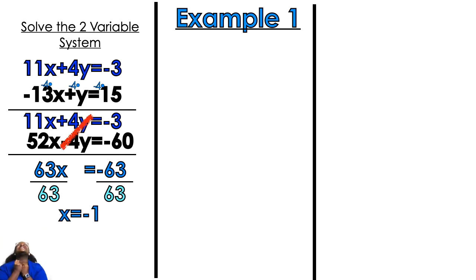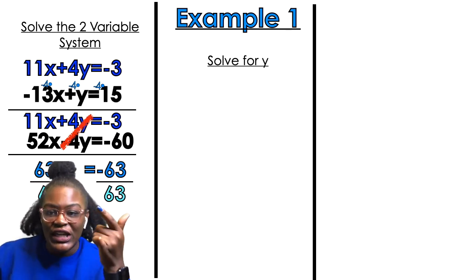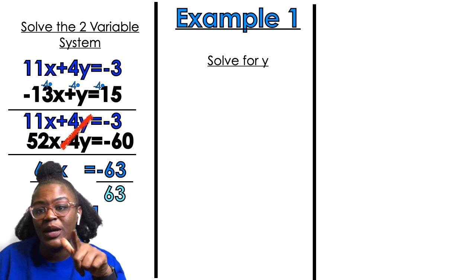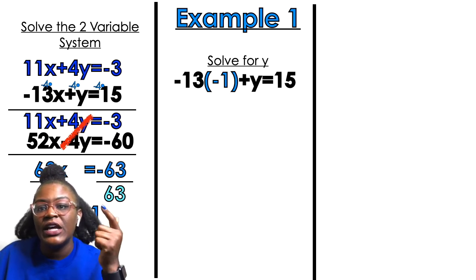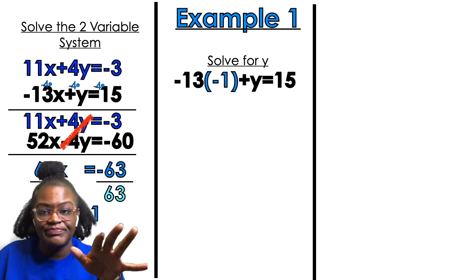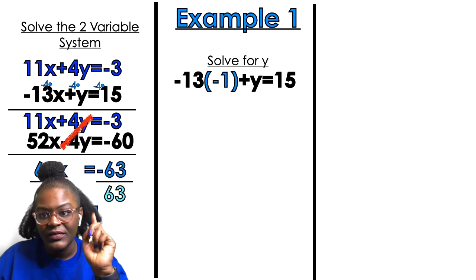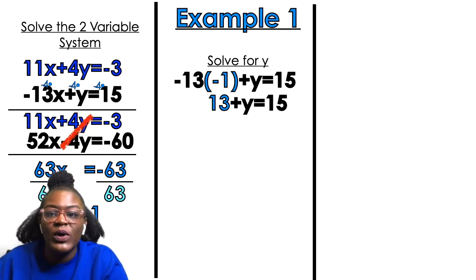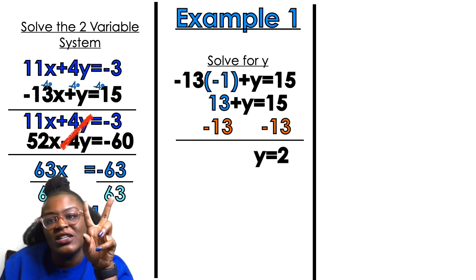I have one variable — x equals negative 1. Now I finish solving the two-variable system by solving for y. I'm going to plug that x value into one of my equations — I'll choose the black one. Plugging in: negative 13 times negative 1 gives me positive 13, plus y equals 15. Subtracting 13 from both sides: y equals 2.